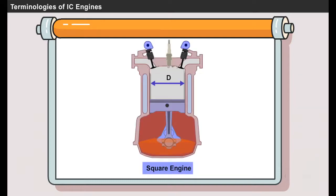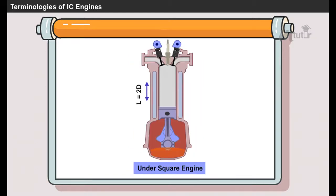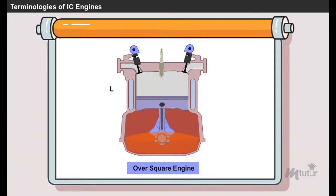An engine with equal bore diameter and stroke length is called a square engine. If stroke length is twice the size of the bore diameter, then the engine is called an under square engine. If the bore diameter is twice the size of the stroke length, then the engine is called an over square engine.